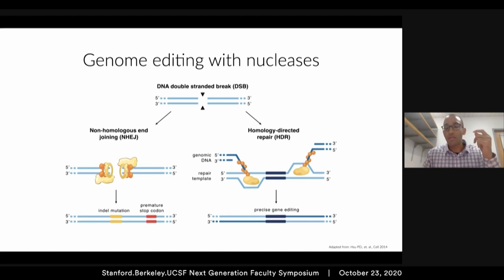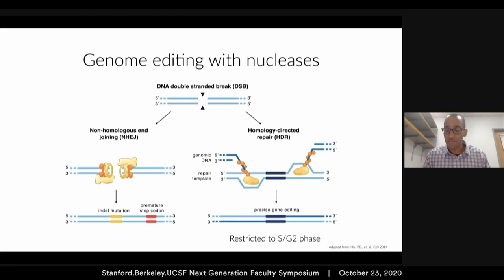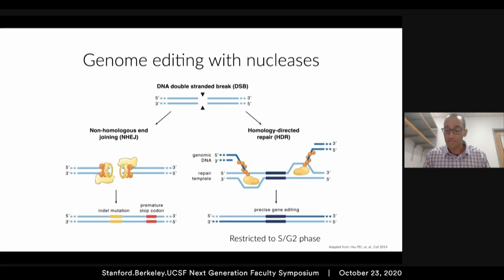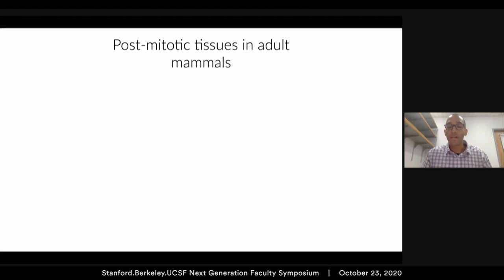One goal of genome editing is to directly reverse causal genetic mutations in order to treat disease. In order to do this, it requires the homology-directed repair pathway most of the time, which is only active during the S/G2 phase of the cell cycle, so it is restricted to mitotically active cells. This means that for cells that are slowly dividing or are post-mitotic, it's very challenging to execute genome editing therapy. This would include hepatocytes — cells in your liver — neurons, and cardiomyocytes.